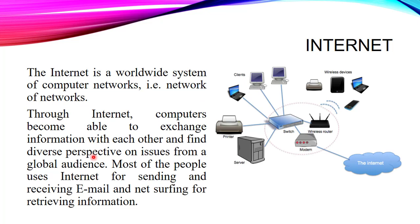Internet is a worldwide system of computer networks — that is, a network of networks. Internet is also known as network of networks because there are so many networks connected, including some devices wirelessly and some wired. Through the internet, computers become able to exchange information with each other and find diverse perspectives on issues from a global audience. Everyone can share their thoughts and knowledge with everyone around the world. Most people use the internet for sending and receiving emails, and for net surfing to retrieve information.